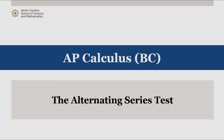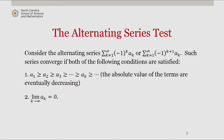In this video, we'll work through a couple of problems to demonstrate the application of the alternating series test. Let's recall the test, which states that if we consider the alternating series — the sum from k equals 1 to infinity of negative 1 to the k times a sub k, or the sum from k equals 1 to infinity of negative 1 to the k plus 1 times a sub k — such series converge if both of the following conditions are satisfied.